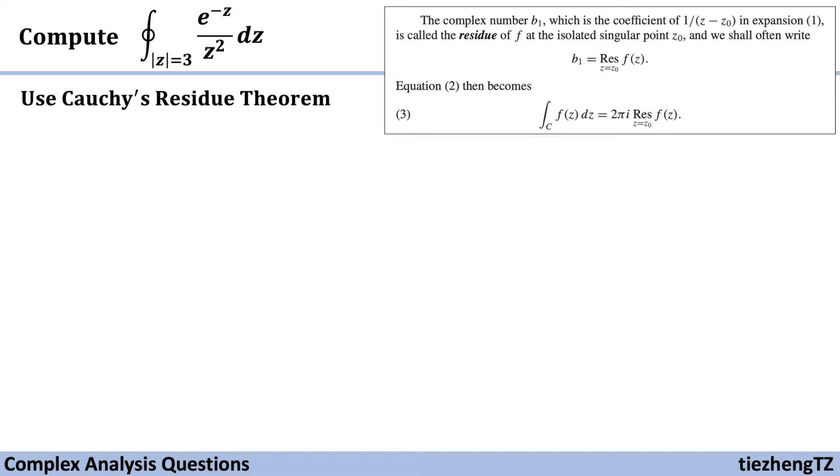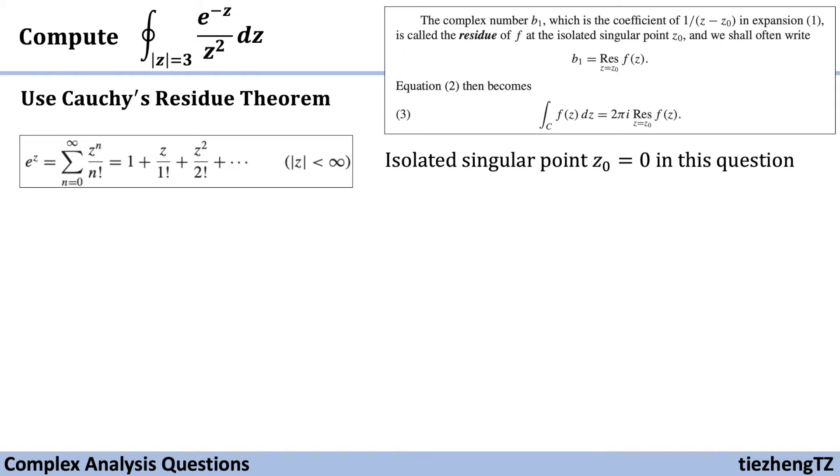In our case, the isolated singular point z₀ is 0 from the denominator. We also notice e^(-z) in the question, so we know we need to expand it. Our function f(z) = e^(-z)/z², and we're going to use the expansion form.